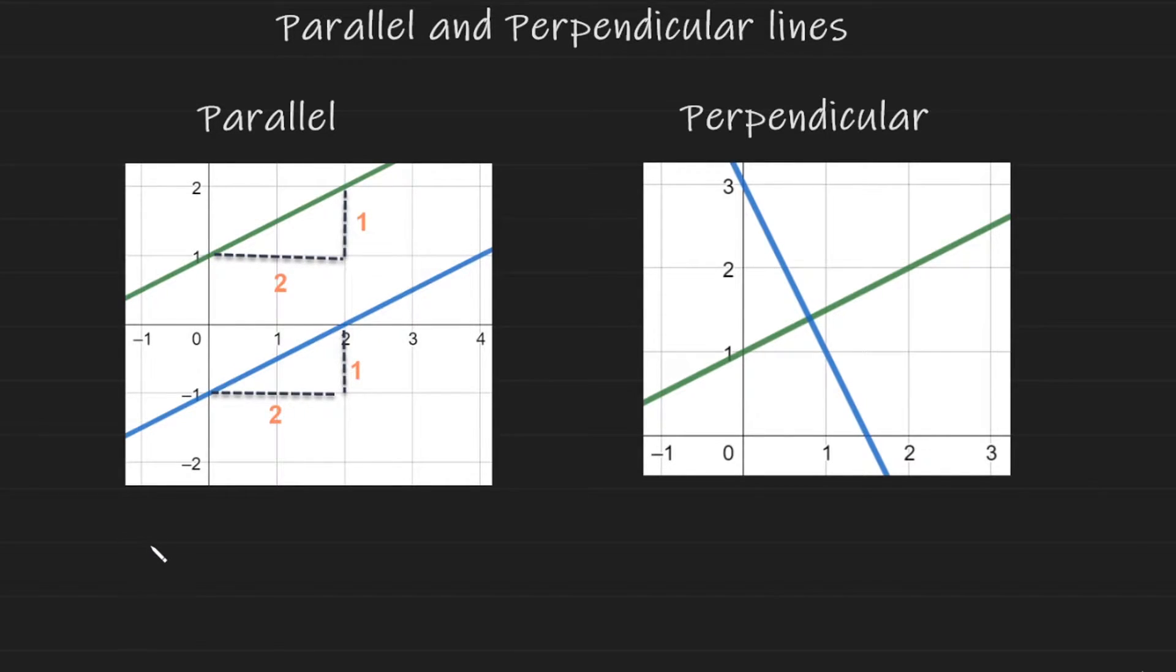So if we were to write equations of two different lines, they could look something like this. Even though these are two different equations and they represent two separate lines, we know they are parallel because the gradient, which is the number in front of x, these twos are the same. And that's how you know two lines are parallel, when they have the same gradient.